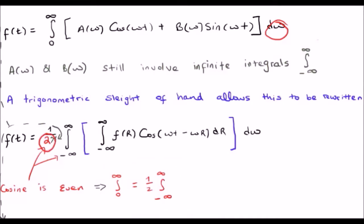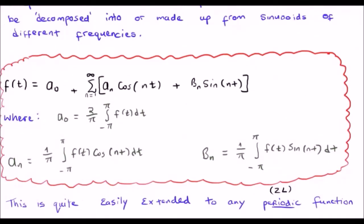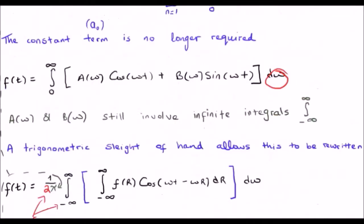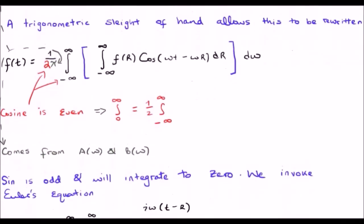What about the π? Well, that was actually there all the time, even though I wasn't writing it. If you go back to the discrete version, we had the 1/π there the whole time. That has remained throughout this derivation. Now, as I said earlier, sine is an odd function and over an even integral, it will integrate to zero. That means I could add an i times the sine of ωt minus ωr, no problem, and it wouldn't change the integral.